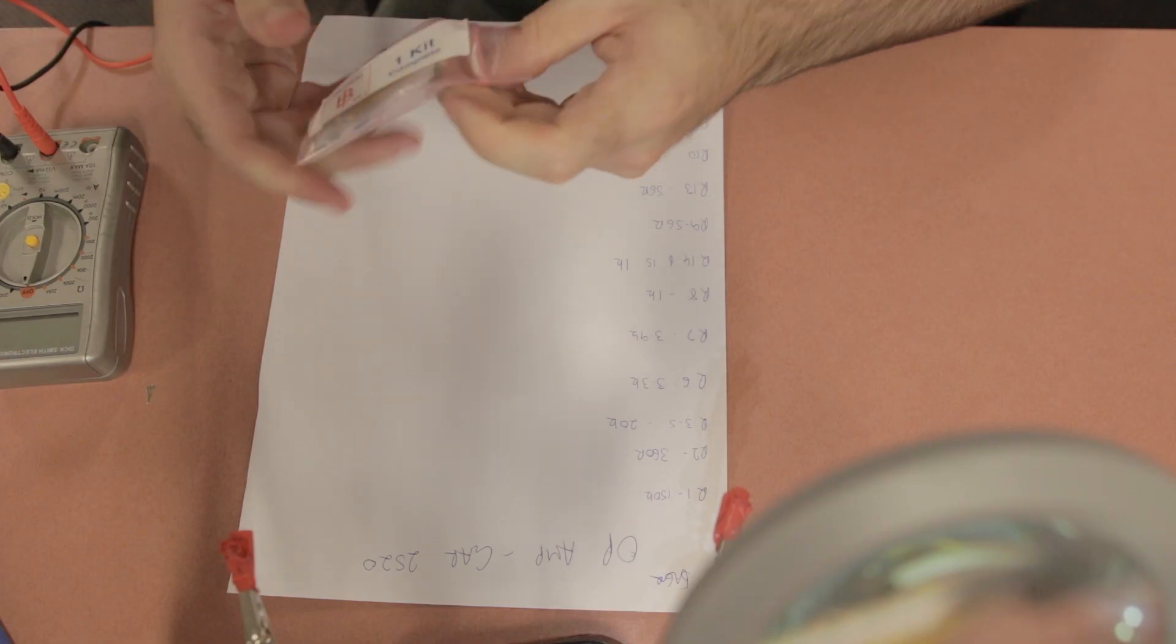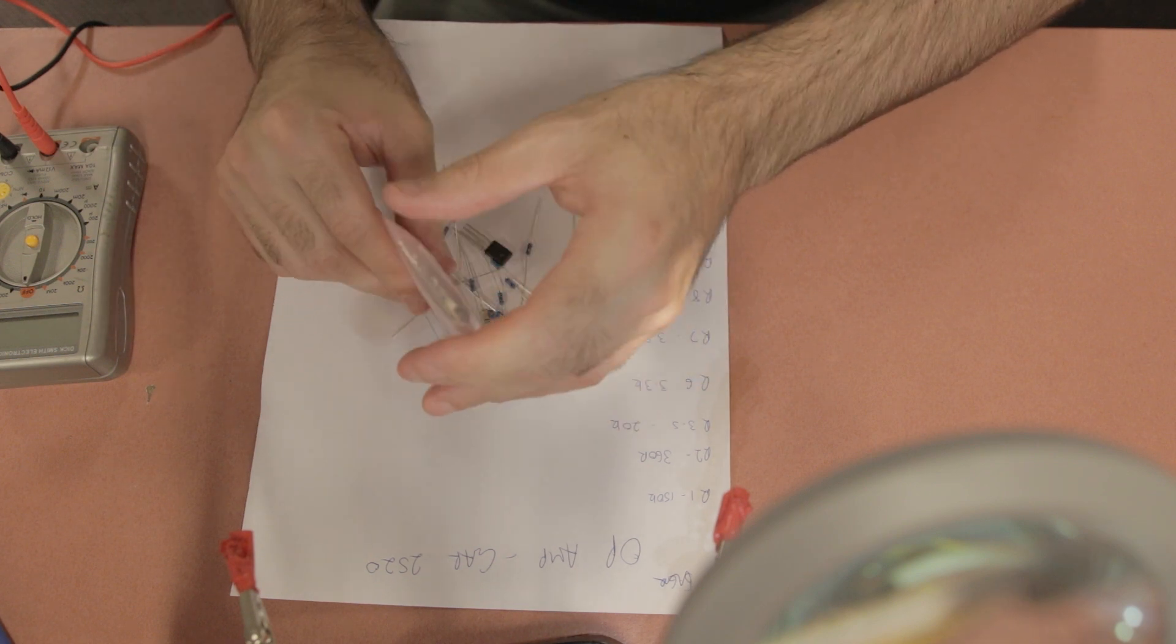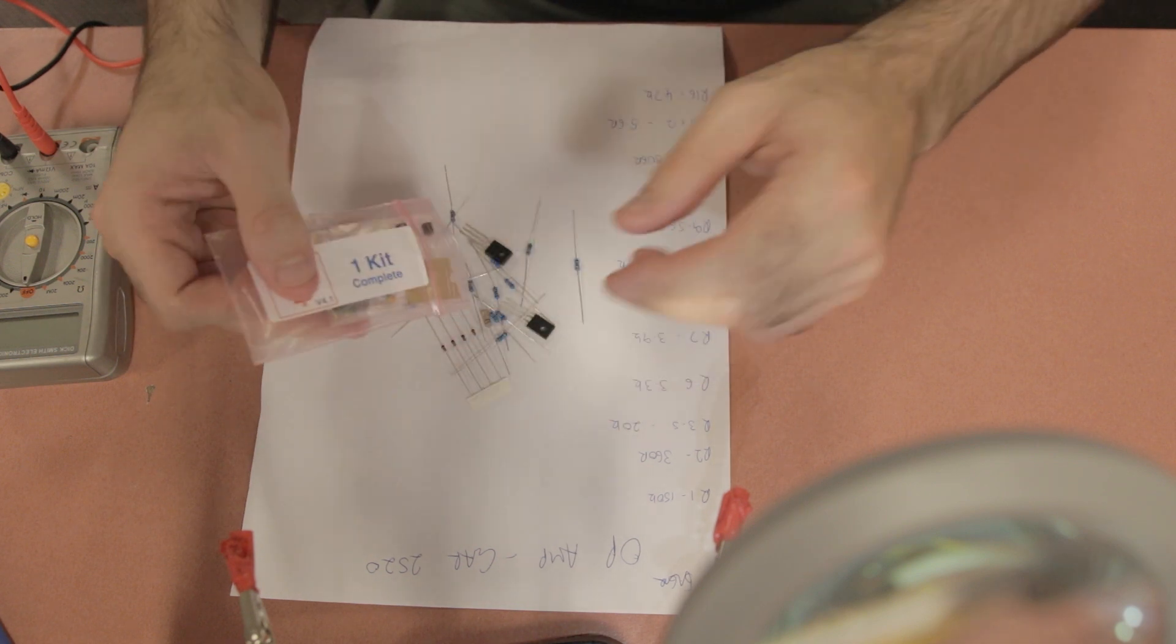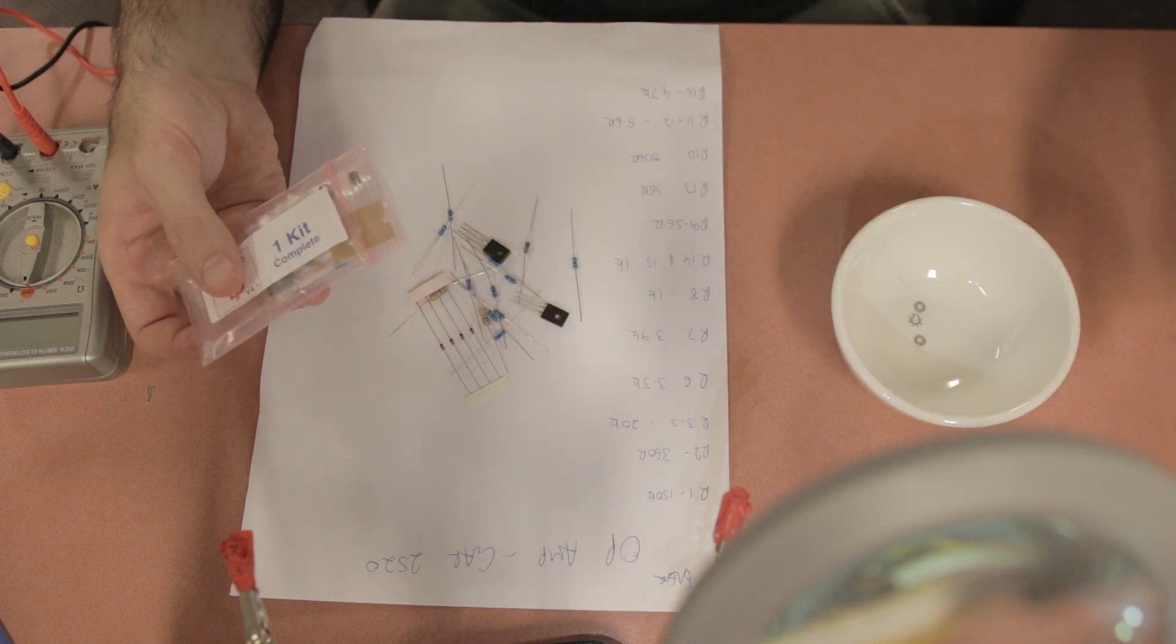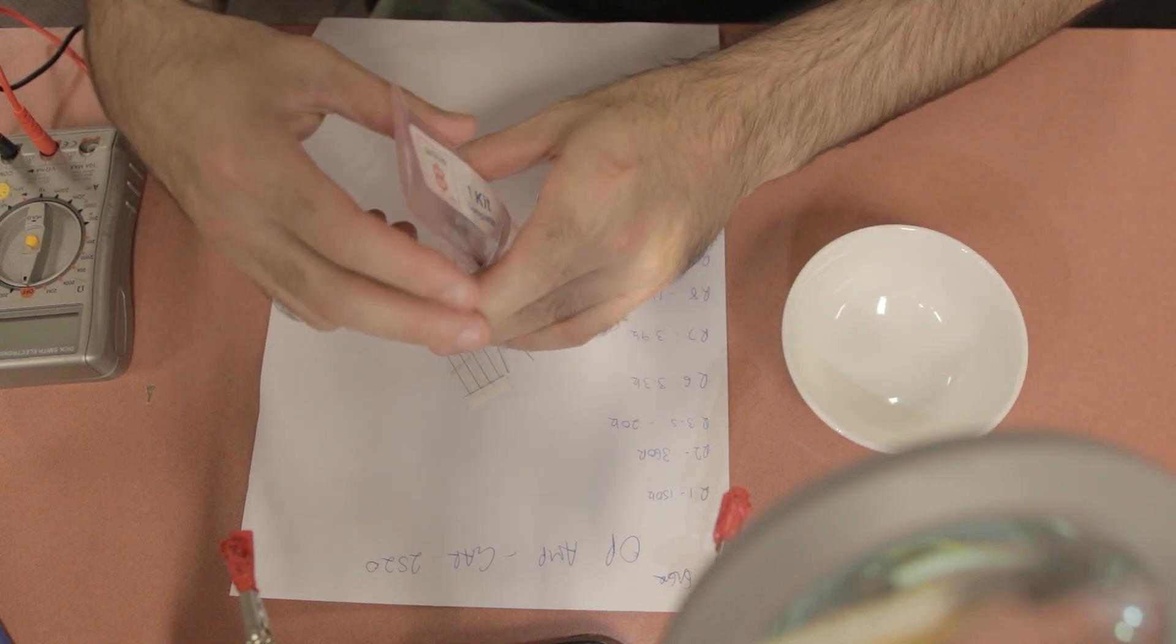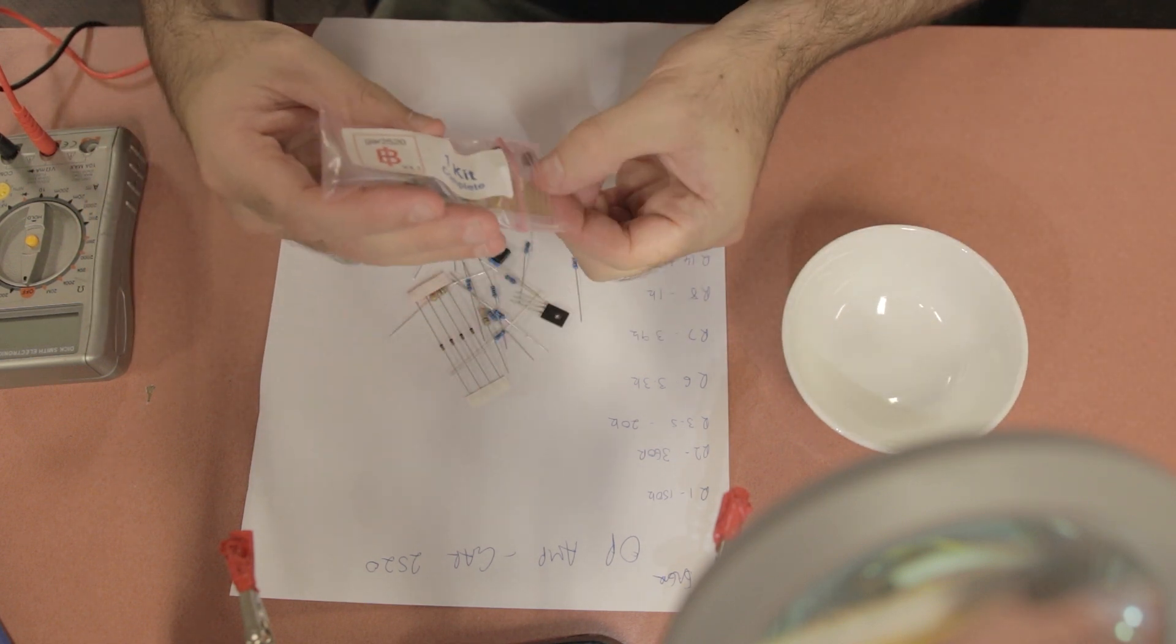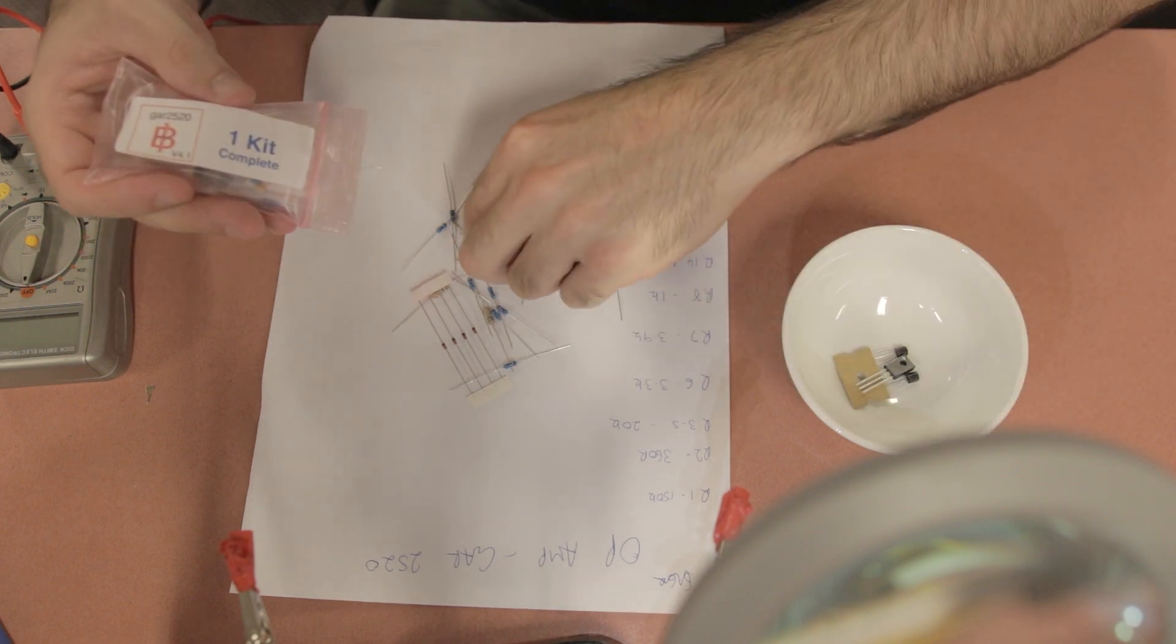So welcome back to another build, guys. It's great to have you back. First up, what you want to do is write out a list of all the resistors and components, and we're going to sort them all out and put them in place with their values. This just makes it a lot easier to find the right components and saves making any mistakes when inserting them in the little PCB boards.